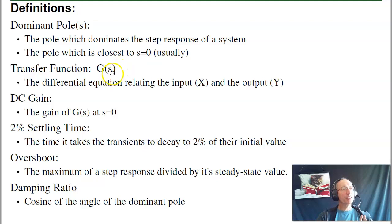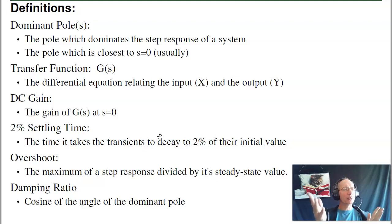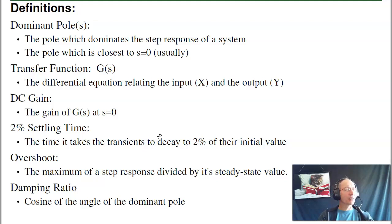The transfer function is the differential equation that relates the input and the output. The DC gain is the gain at DC, at s equals zero. The 2% settling time: a system will respond and in theory takes infinite time to settle out. Infinity is not a terribly easy number to use, so we define the settling time as when the response gets close to zero — within 2%. The reason 2% is used is it has a nice logarithm: the log of 0.02 is minus 4. Back in the days of slide rules, that standard stuck.